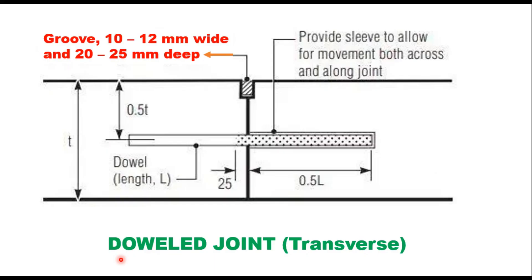This is a butt transverse construction joint. Here, t is the depth of the slab. A groove of 10 to 12 millimeters wide and 20 to 25 millimeters deep is made, and a dowel is provided for transfer of load. The dowel in one slab is provided with a sleeve to allow for movement both across and along the joint.